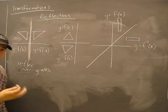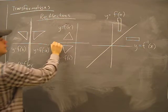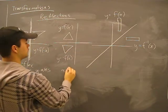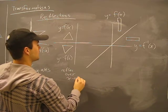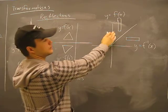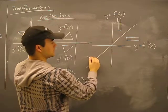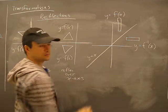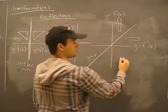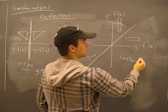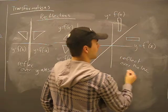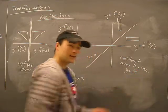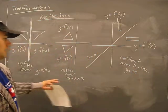We need to know how to verbalize these things. This here is a reflection over the x-axis. This thing here, this line is y equals x. This is a reflection over the line y equals x. That is how to properly say these things.